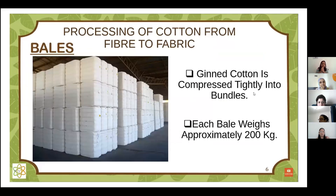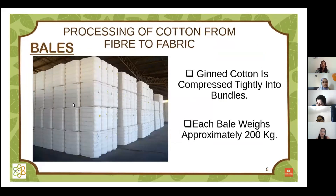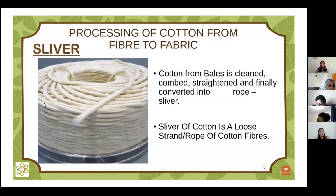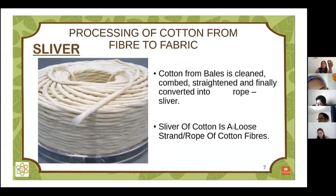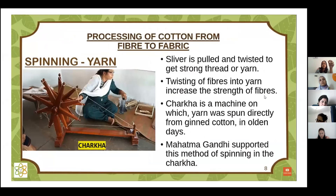Next is baling — the ginned cotton is compressed tightly into bundles. These bundles are approximately 200 kg. Cotton is very light when we hold it, but when compressed tightly we get these heavy bales. Next is the sliver process — from the bales we take out the sliver, which is a straightened, combed material converted into a long row, also called a sliver.